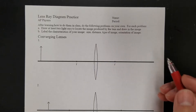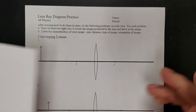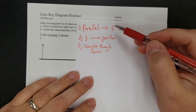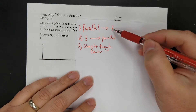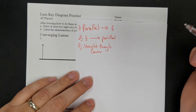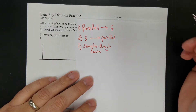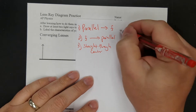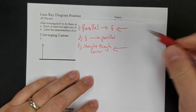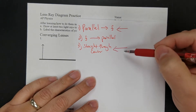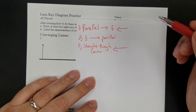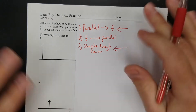I'm going to solve some examples of doing ray diagrams. Remember, your three principal rays are: the parallel through the focal point, the focal point through the parallel, and straight through the center. But for every single one of these, you can just do ray 1 and ray 3. You don't have to do ray 2 — you can get by with just these two every time.